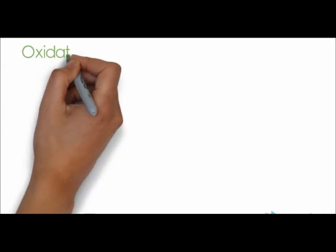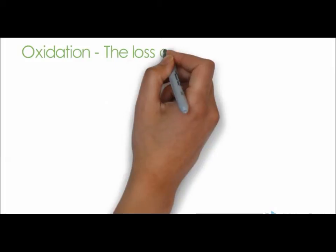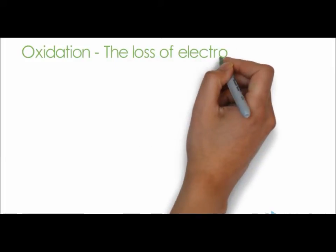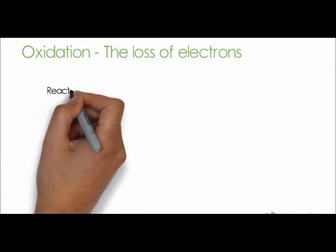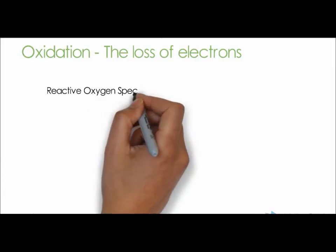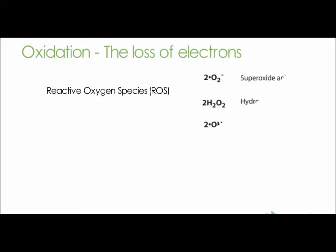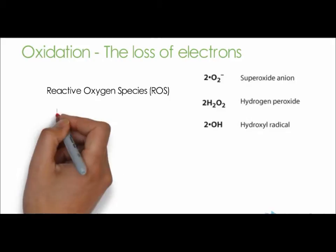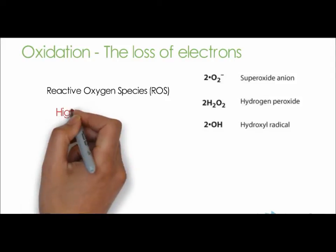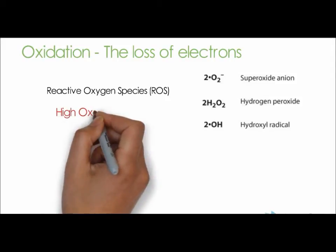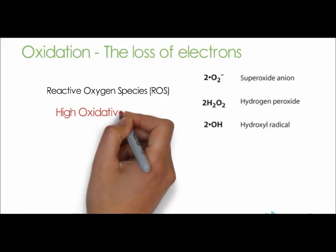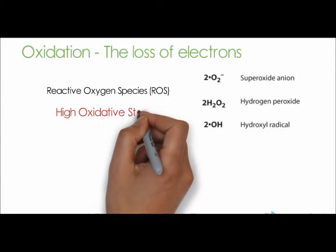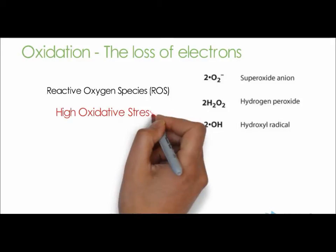For oxidation, which is the loss of electrons, they are caused by reactive oxygen species, ROS, such as superoxide, hydrogen peroxide, and free radicals. This happens during times of high oxidative stress in our bodies. It reflects an imbalance between the systemic manifestations of ROS and antioxidant defenses.